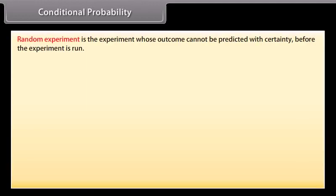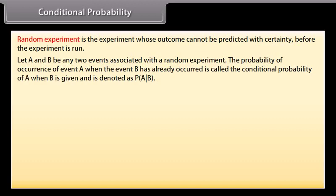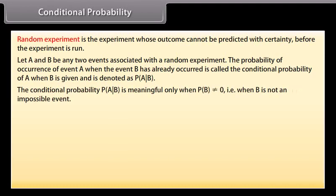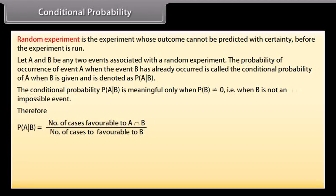Conditional Probability. A random experiment is one whose outcome cannot be predicted with certainty before the experiment is run. Let A and B be any two events associated with a random experiment. The probability of occurrence of event A when event B has already occurred is called the conditional probability of A given B, denoted as P(A|B). This is meaningful only when the probability of event B is not equal to zero. Conditional probability P(A|B) equals the number of cases favorable to A intersection B divided by the number of cases favorable to B.